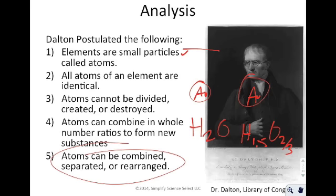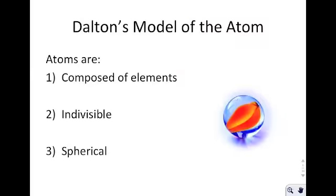These are Dalton's postulates, and were the first basis for his scientific theory about the atom. Dalton's model of the atom was relatively simplistic — think of it like a marble. It was composed of elements, they were indivisible, they were spherical, and they were solid. This is a solid atom with no differentiation; it's the same all the way through. That's Dalton's model of the atom.